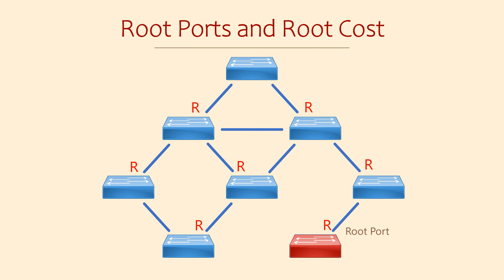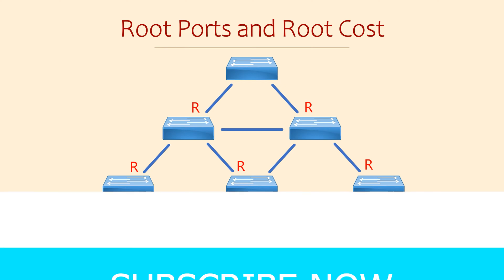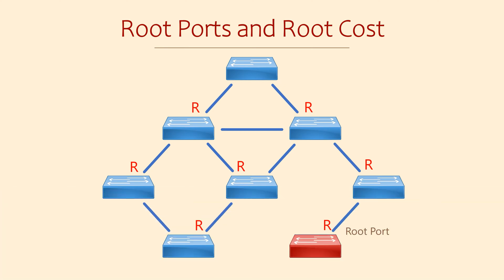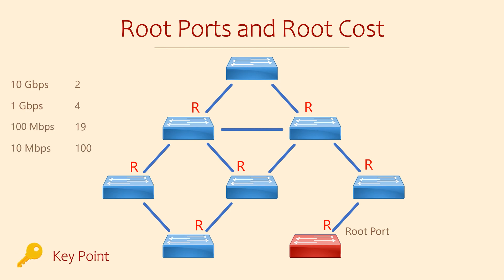Let's not lose sight of the big picture though. Spanning tree needs to find loops in the network. To understand how it does that, we need to know about something called path cost. Each interface has a speed, something like 100 meg or 1 gig. Spanning tree uses this value to assign a cost to a port — the faster the interface, the lower the cost.